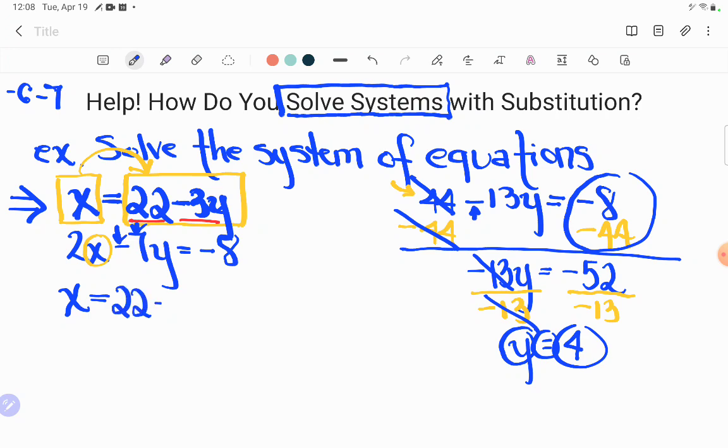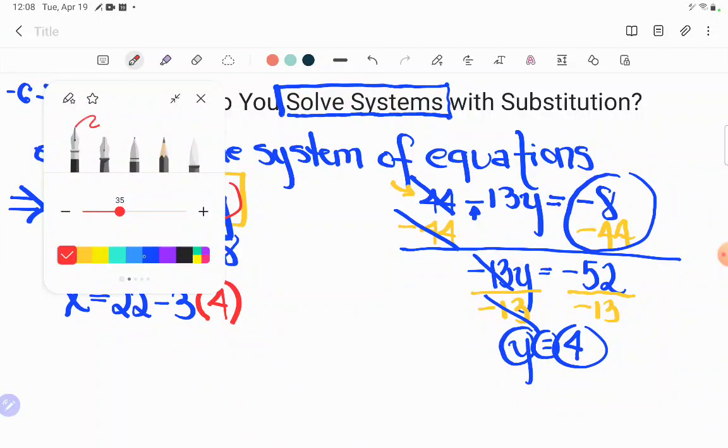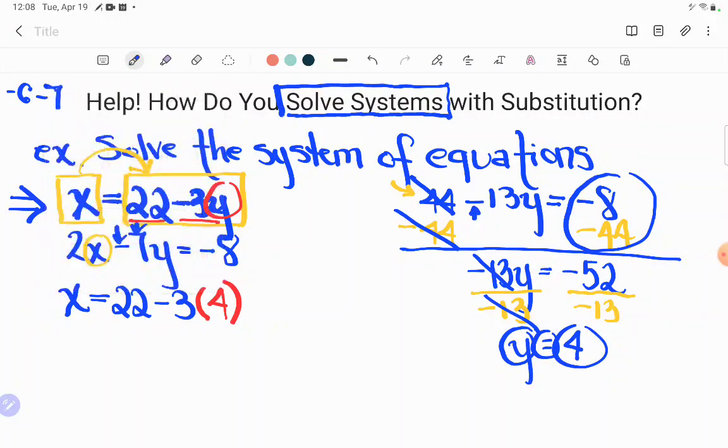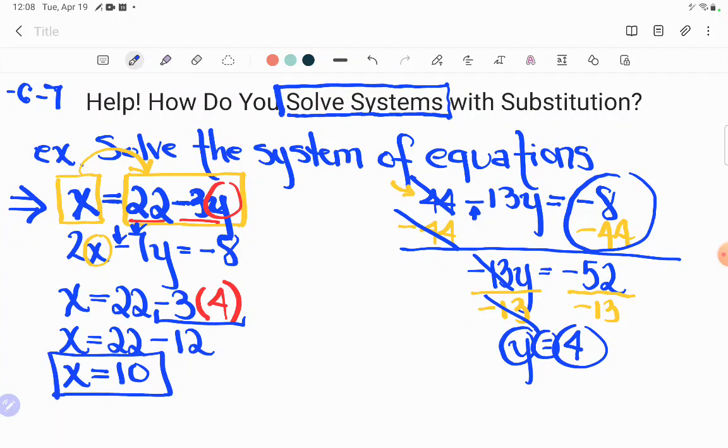So what will X be? X will be equal to 22 minus 3. Yes, but Y is not a mystery anymore. Instead of just writing Y, I can again use parentheses and substitute in 4 where I once saw Y. And now there's no more letters here on the right hand side. It's just some number crunching to do to figure out what X is equal to. So X is going to be equal to, order of operations, I should multiply first. So I'll do 3 times 4. And negative 3 times 4 is negative 12 or minus 12. And then of course, 22 minus 12 is 10. So now I know both of the variables values. I know that X is 10 and Y is 4. I've solved the system now, the system of equations, because I know what all the variables are equal to.